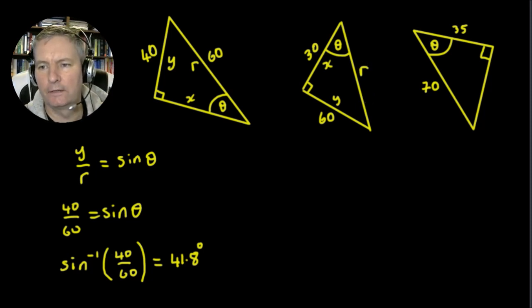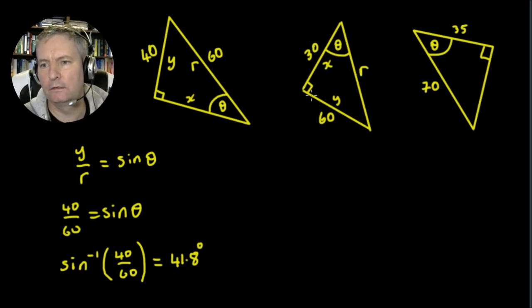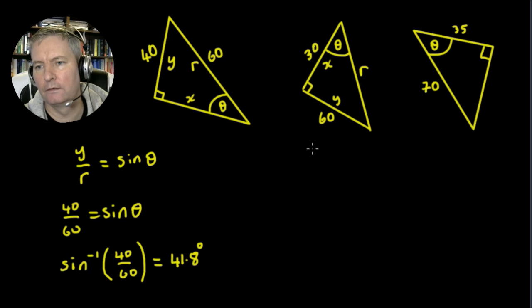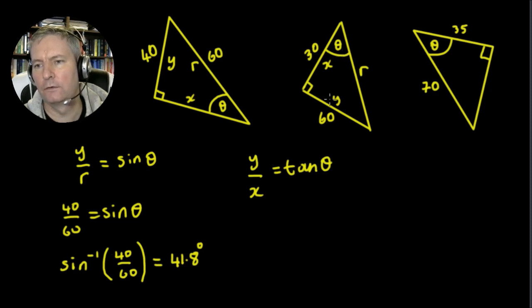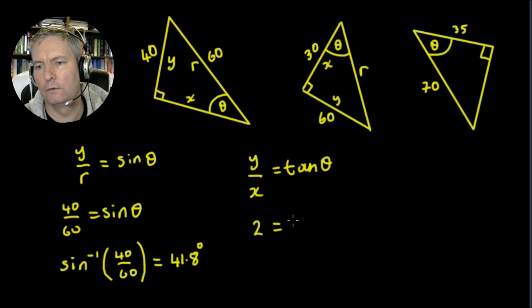Let's find a trig identity to allow us to find this angle theta. We've got the opposite, which is y, and the adjacent, which is x. The opposite over adjacent — that's y upon x — is going to be the tan. So y upon x equals the tan of theta. The y upon x is 60 upon 30, which is just 2, so 2 equals the tan of theta.